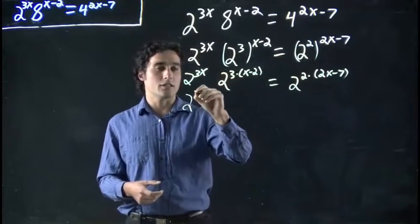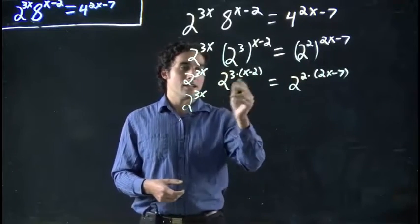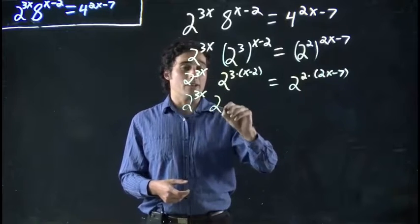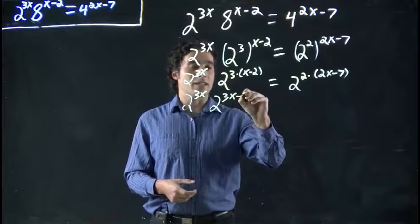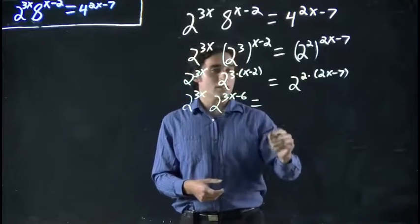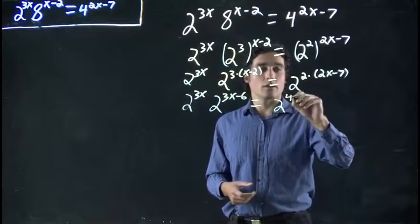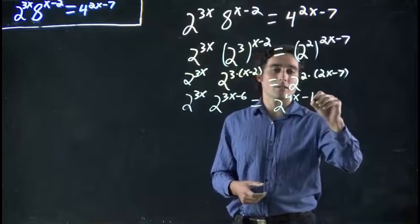And so this is still 2 to 3x. This we can actually multiply out. We get 2 to the 3x minus 6. And this is equal to 2 to the 4x minus 14.